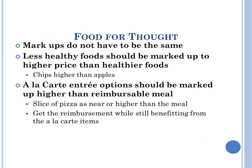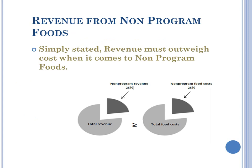Markups do not have to be a standard. We hope that less healthy options will be marked up higher than healthy options. A la carte entree options should be marked up higher than the reimbursable meal. We want each program to receive the reimbursement provided from the USDA, then make profit on the non-program foods. We want districts to receive the federal reimbursement first and foremost. Simply stated, the USDA's only requirement is that you make more revenue than the cost you put out.